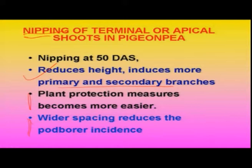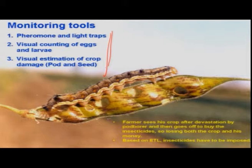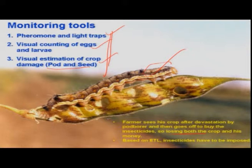Studies have also indicated that wider spacing reduces pod borer damage. Another important component of IPM is monitoring. Various methods are available: pheromone and light trap monitoring, visual counting of actual number of eggs and larvae, and visual estimation of crop damage, either pod damage or seed damage. Farmers often go to the field only when damage is visible and larvae are in the grown-up stage, then apply insecticides — by which time they have already lost the crop, and the spraying cost is an additional burden.